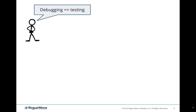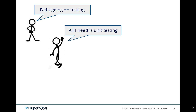In the early days, testing was really the same as debugging. As a developer, you wrote your code, made sure it worked by running it, fixing bugs, running it again — rinse and repeat until you thought it was about right. Then along came unit testing, which got people really excited about 20 years ago. Developers would write unit tests to make sure individual blocks of code did what they said they'd do — seeing the lights turn green and knowing the code was good.